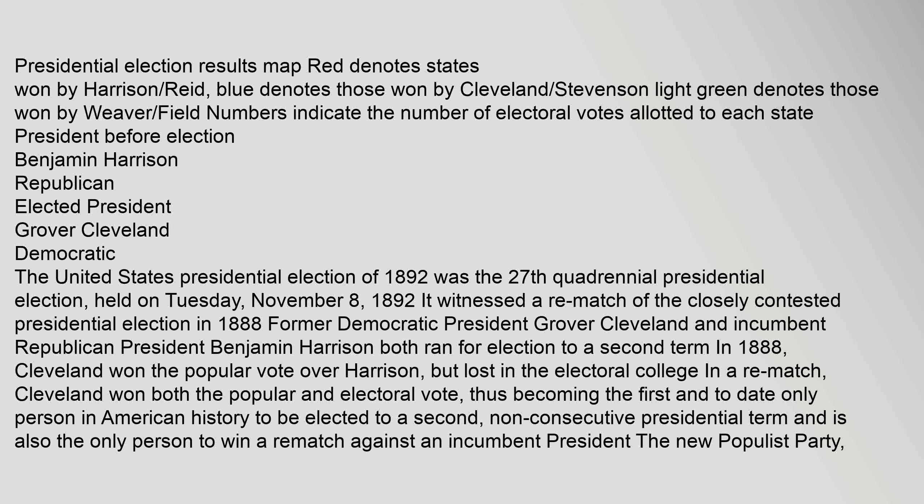Former Democratic President Grover Cleveland and incumbent Republican President Benjamin Harrison both ran for election to a second term. Cleveland won the popular vote over Harrison in 1888 but lost in the Electoral College. In a rematch, Cleveland won both the popular and electoral vote, thus becoming the first and to date only person in American history to be elected to a second, non-consecutive presidential term, and also the only person to win a rematch against an incumbent president.